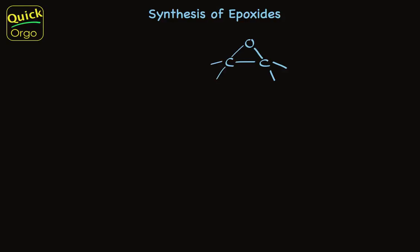Epoxides occur in important biologically active compounds and are widely used in organic synthesis. So it's a good thing there are easy ways to make them. There are two key ways — I'll show you both. Both methods transform an alkene into the epoxide.